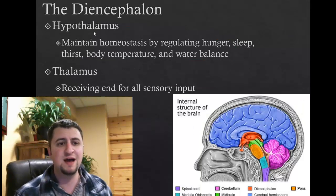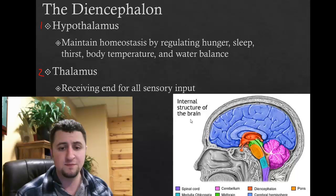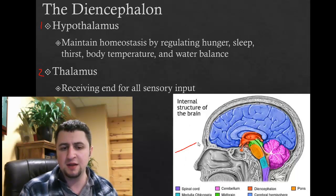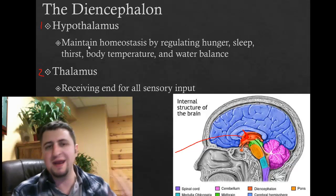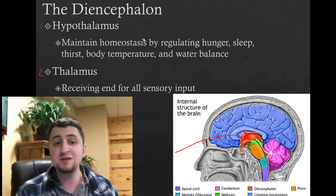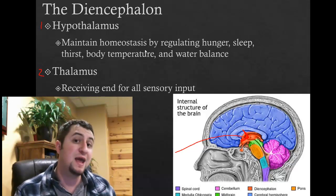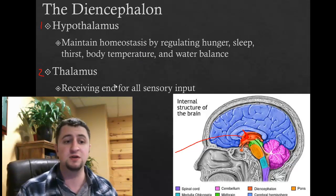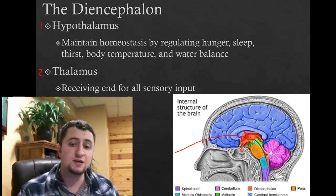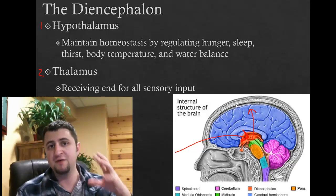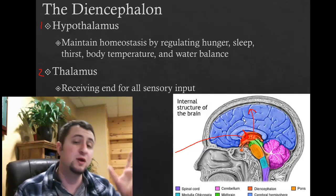The diencephalon includes two parts: the hypothalamus and the thalamus. The hypothalamus helps maintain homeostasis through hormones that regulate sleep, hunger, thirst, body temperature, and water balance. The thalamus serves as sensory input — it relays sensory information to higher order brain functions, picking up certain senses that will eventually be processed by the cerebrum.